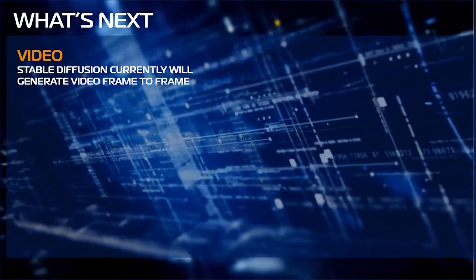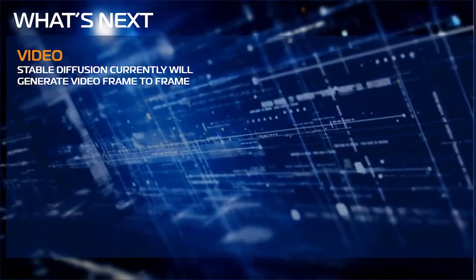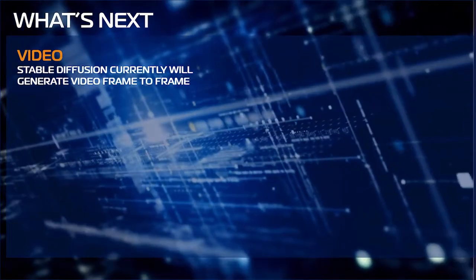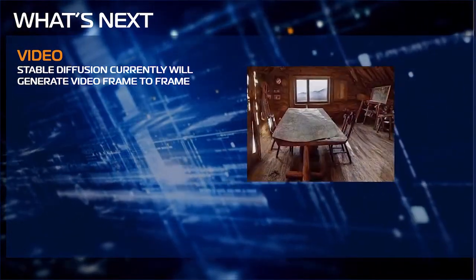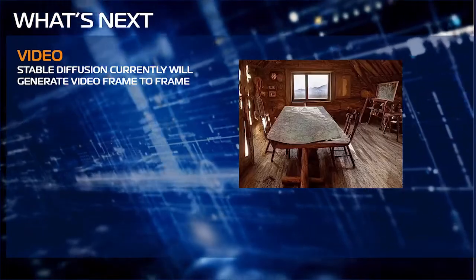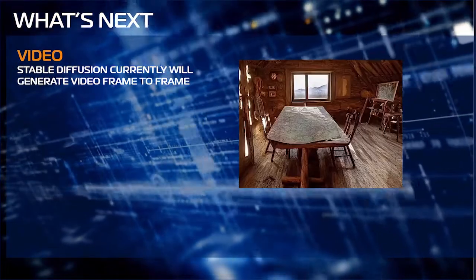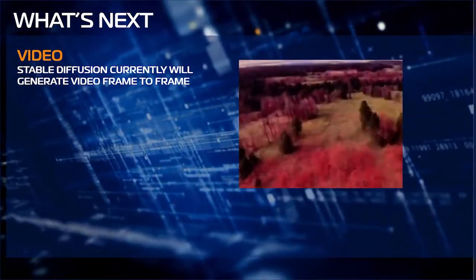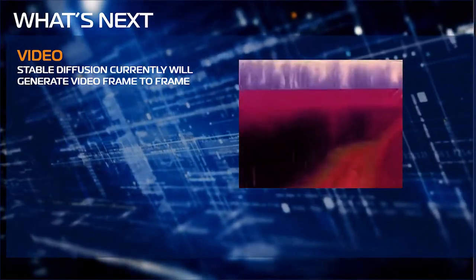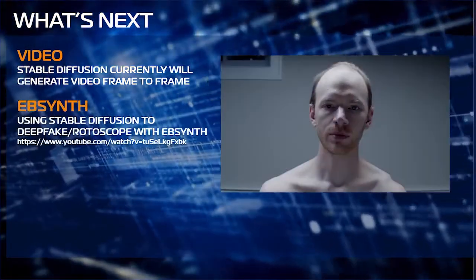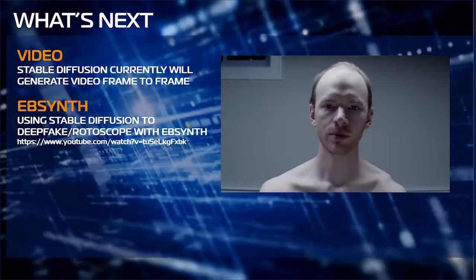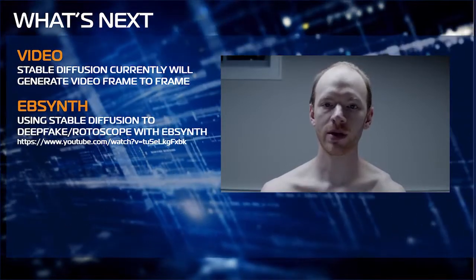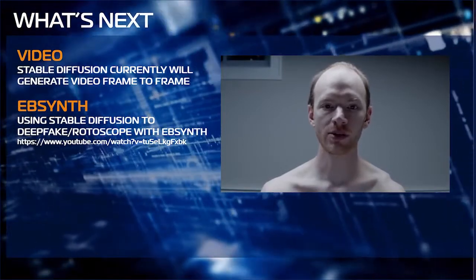In just six months since Stable Diffusion was released, we've gone from quirky art to photorealistic rendering — the future will be nothing less than amazing. Right now you can generate video using the same Stable Diffusion method. With text prompts, seeds, and config scales, you can customize morph-like animation from one prompt to another. EBSynth is a tool from Secret Weapons that can transform existing video by painting over it with other images, and this can be combined with AI-generated images to create realistic rotoscope-like effects.